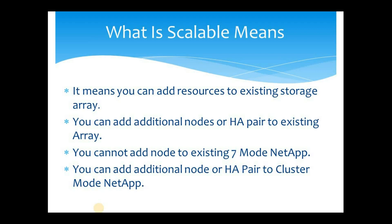In the case of cluster mode NetApp, suppose you have a cluster of 2 nodes — that is 1 HA pair. You can bring another HA pair, add cables to the inter-cluster switches, and the new nodes can be added to the existing cluster. It does not take much time either — within one day you can complete the full setup. You can add multiple HA pairs to your existing cluster. This is the main difference that differentiates 7 mode NetApp from cluster mode NetApp.